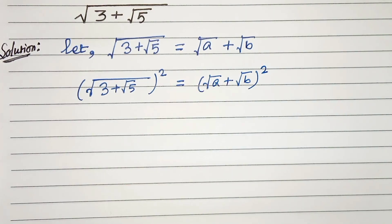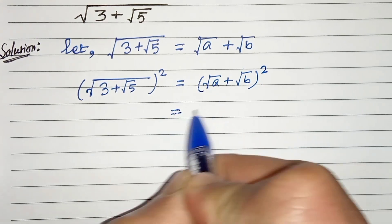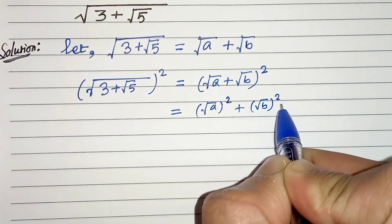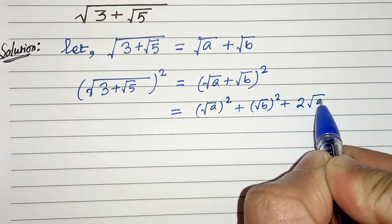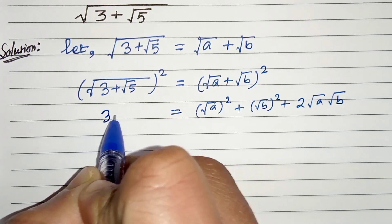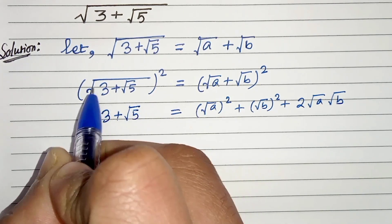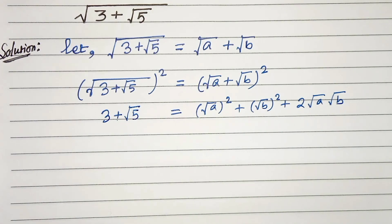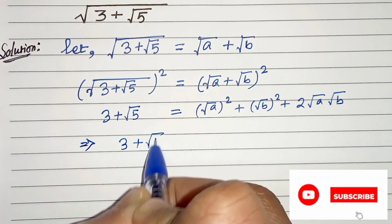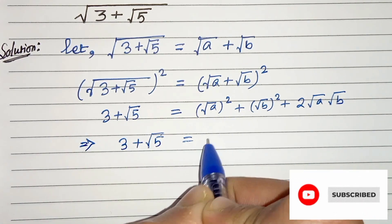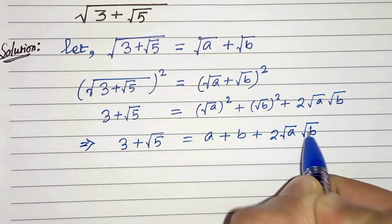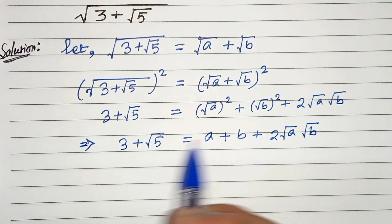We know that (a+b)² is a squared plus b squared plus 2ab. So we get: root a whole square, plus root b whole square, plus 2 root a root b. On the left hand side, we will get 3 plus root 5 — the root and square cancel. So in the next step, 3 plus root 5 equals a plus b plus 2 root a root b.